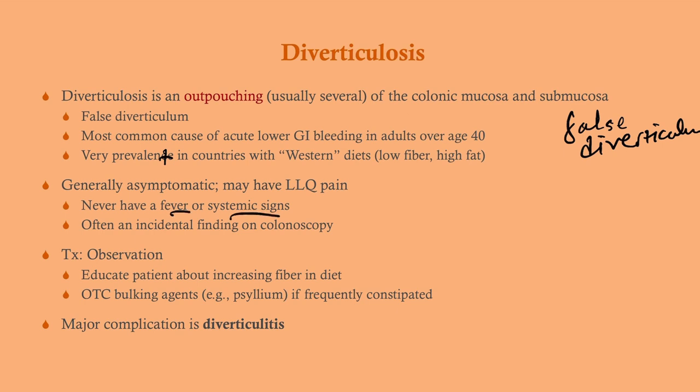Diverticulosis is generally asymptomatic; patients may have left lower quadrant pain, but you will never see fever or systemic signs — that points to diverticulitis. It's often diagnosed when a patient comes in for routine surveillance colonoscopy and you see these little cave-like openings in the intestinal wall. There is nothing we do about it except observation and educating patients to increase fiber intake. Nine out of ten Americans are deficient in fiber; we want 20 to 25 grams of dietary fiber per day.